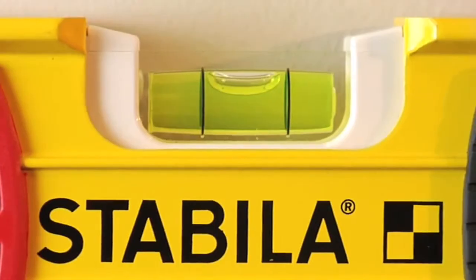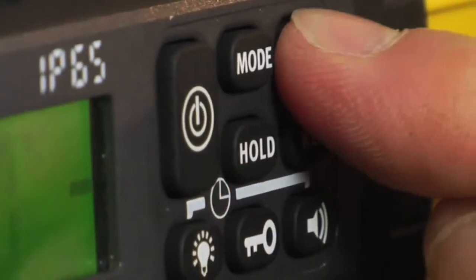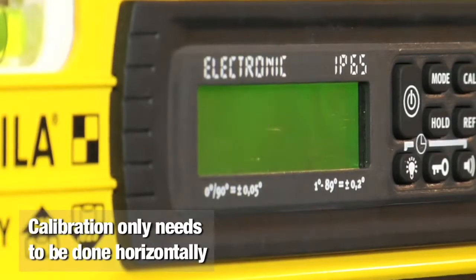Don't worry about what the digital portion is reading. Now press the CAL button twice, it'll flash CAL, and when it's ready it'll flash RDY.